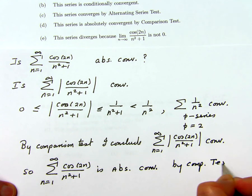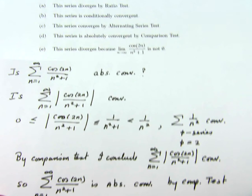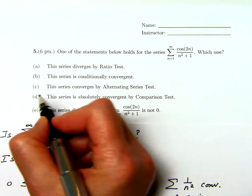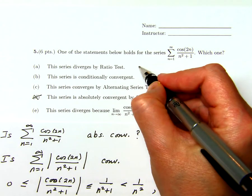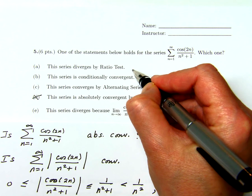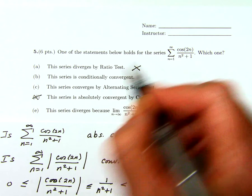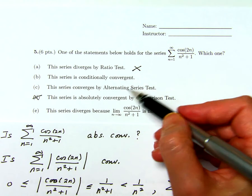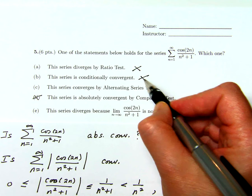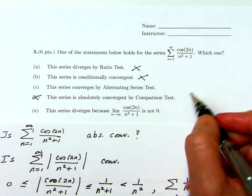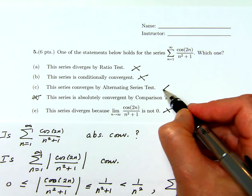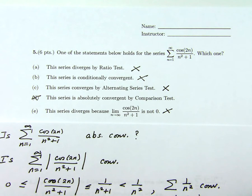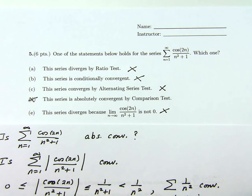So I have D is true. And this rules out this one because a series cannot converge and diverge. It can't be conditionally convergent because it is absolutely convergent. It doesn't diverge, and the alternating series test is not applied. So D is the correct answer.